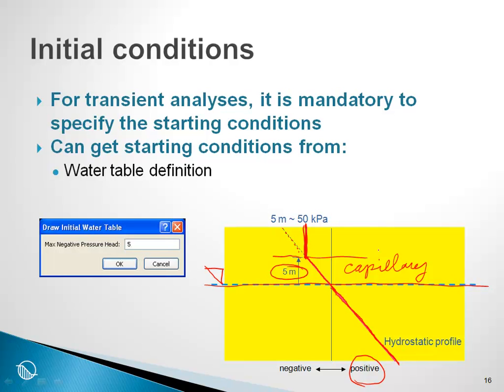You as the user must specify the water table, and then you can specify the height at which the pore pressure remains negative above the water table, or in other words, this allows you to define the height of the capillary zone. That's one way of defining initial conditions and is actually done quite commonly and quite frequently.